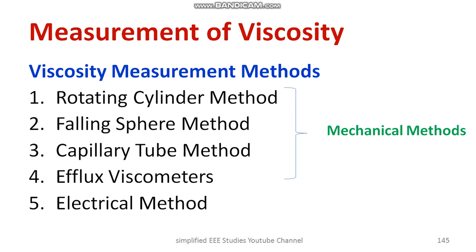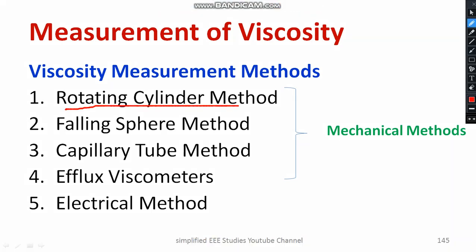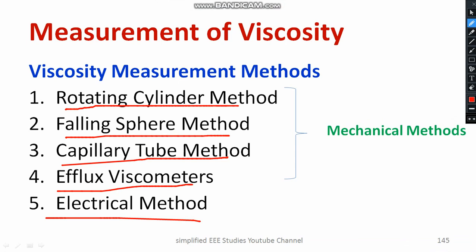What are the different methods of measurement of viscosity? The methods are as follows: rotating cylinder method, falling sphere method, capillary tube method, efflux viscometer, and there are also a few electrical methods. Methods one through four are generally termed mechanical methods, while electrical methods are treated separately and will be discussed individually. In the coming sessions, I will brief up these different methods of measurement of viscosity.